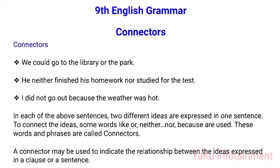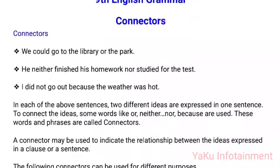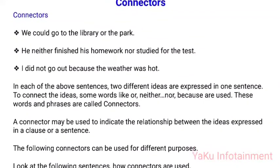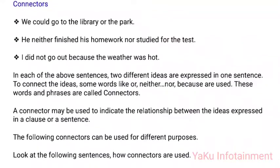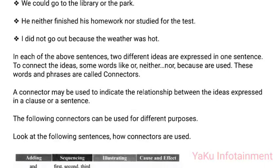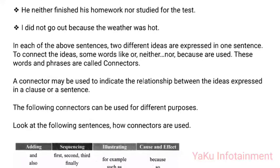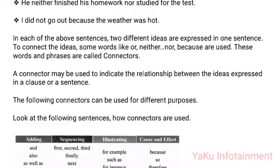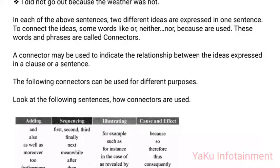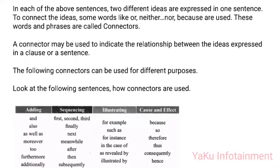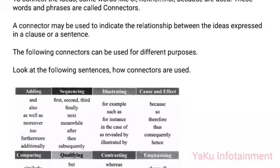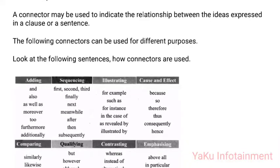Connectors: Words used to join ideas in sentences. Examples: 'We could go to the library or the park.' 'He neither finished his homework nor studied for the test.' 'I did not go out because the weather was hot.' In each of these sentences, two different ideas are expressed in one sentence. To connect the ideas, words like 'or,' 'neither...nor,' and 'because' are used. These words and phrases are called connectors. A connector indicates the relationship between ideas expressed in a clause or sentence.